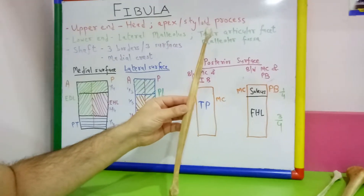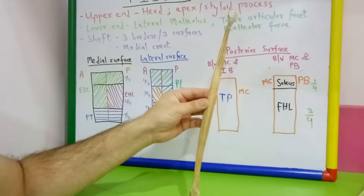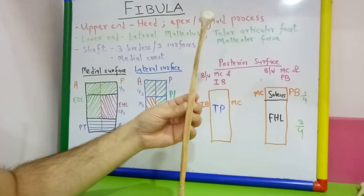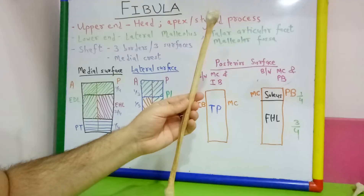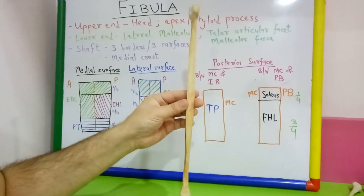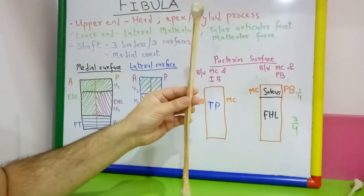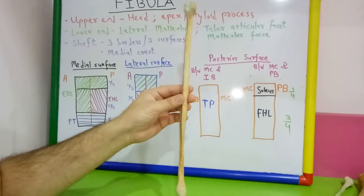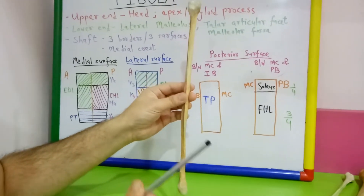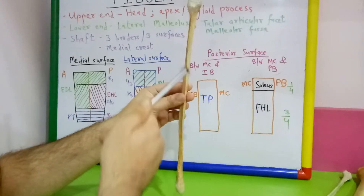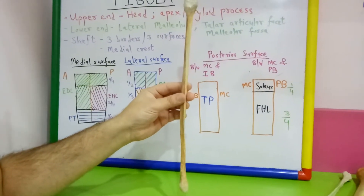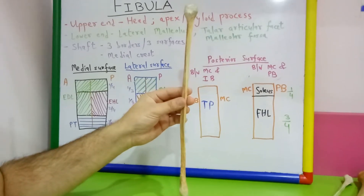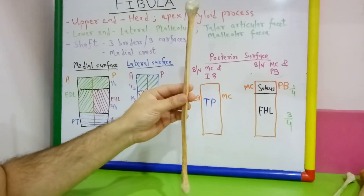Hello everyone. In this session, I will demonstrate the general features and attachments of fibula. This is the fibula, which is a very slender bone situated in the leg. There are two bones in the leg: the medial bone is tibia and the lateral bone is fibula. The fibula is homologous with the ulna in the upper limb. It is a typical long bone.